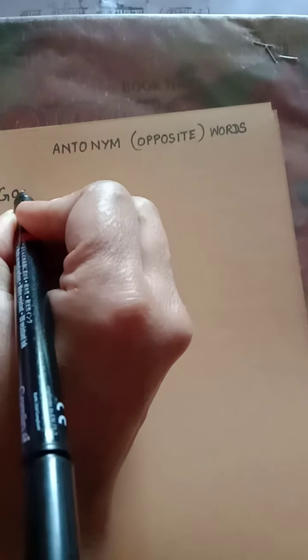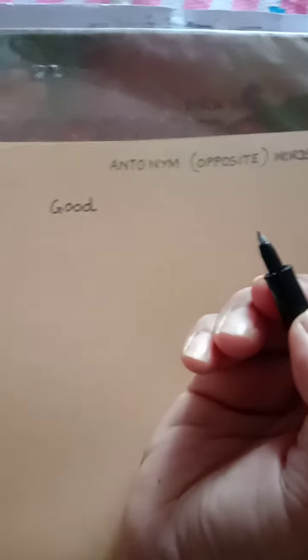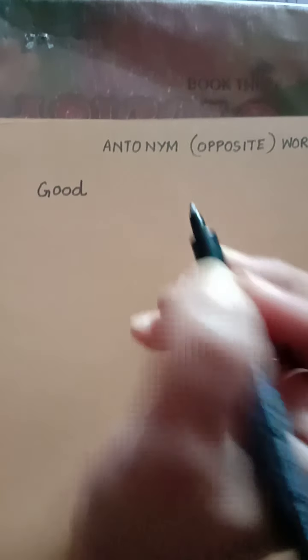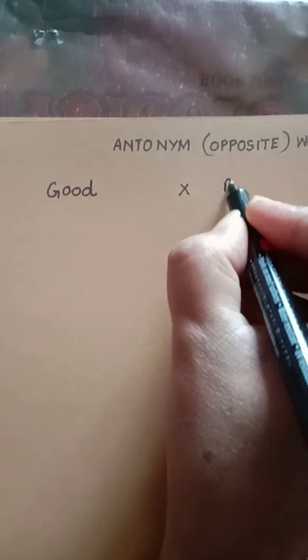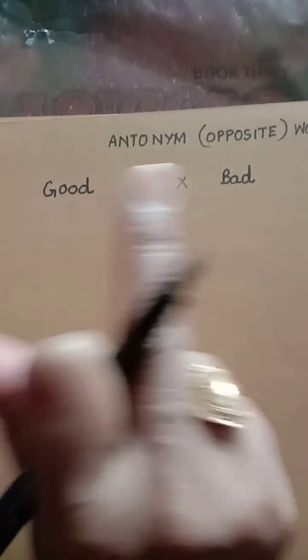Do you know the meaning of the word G-O-O-D, good? Everybody knows the meaning, right? Good means achcha. So, the opposite of good will be bad — B-A-D. Bad means ganda. The opposite of the word good is bad.